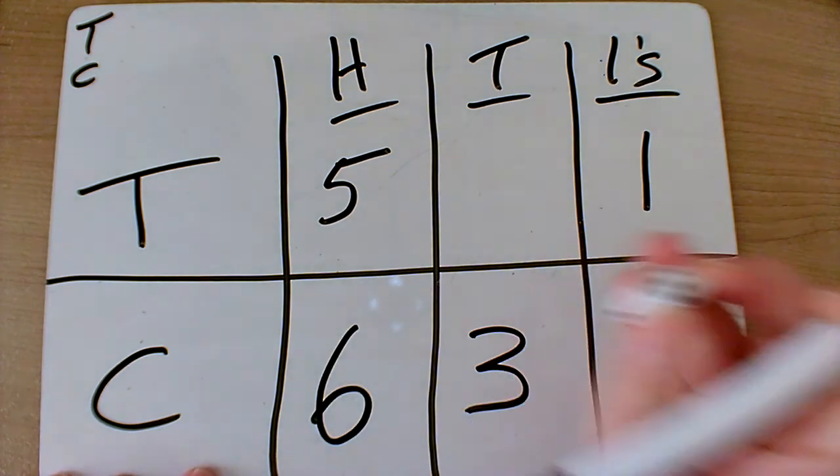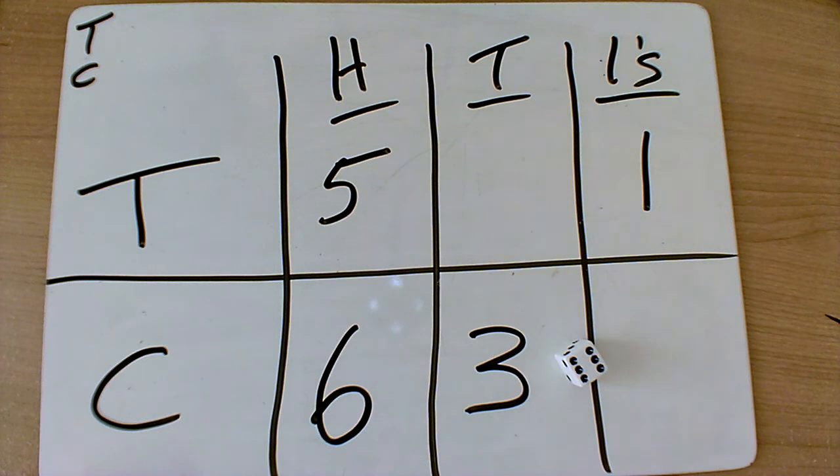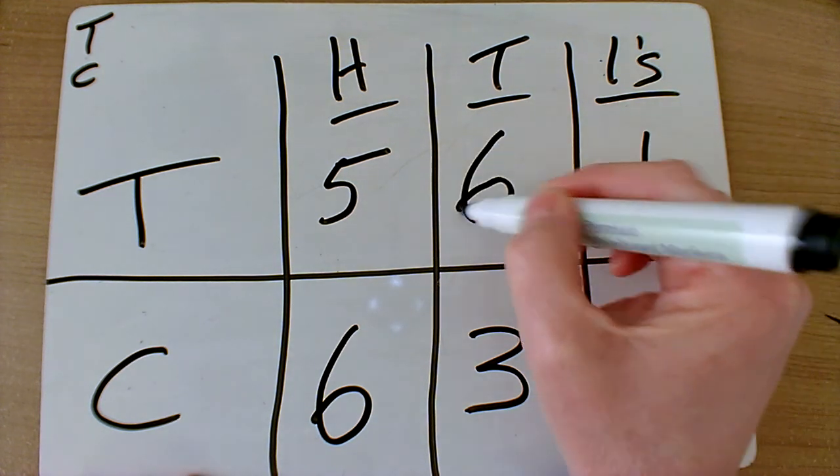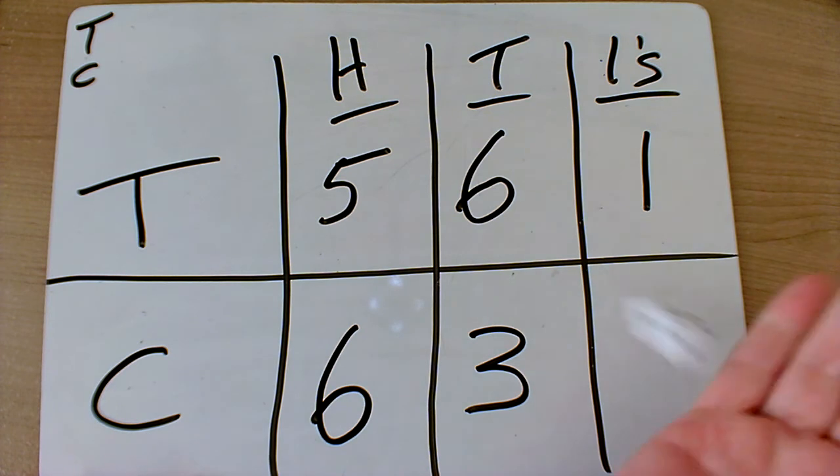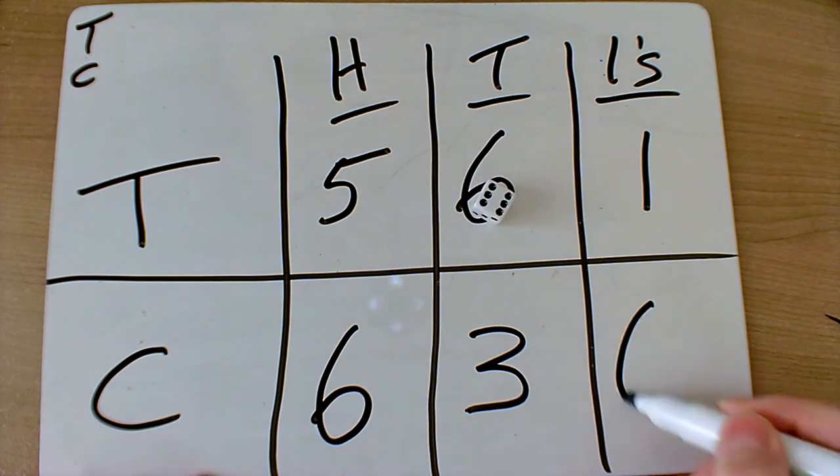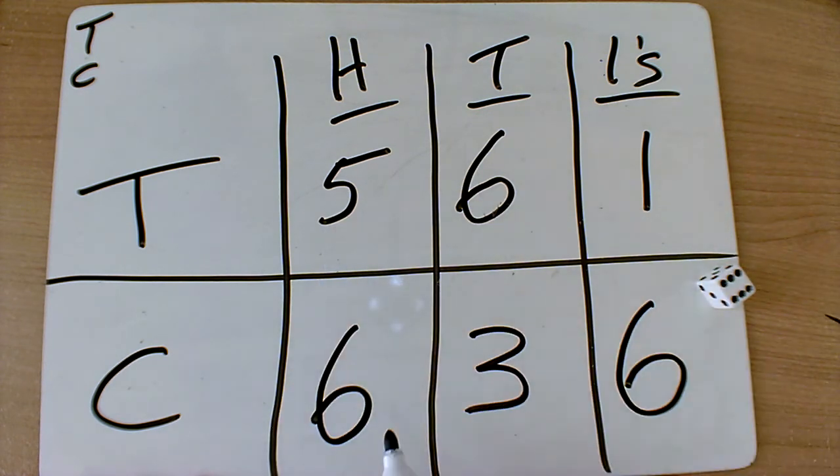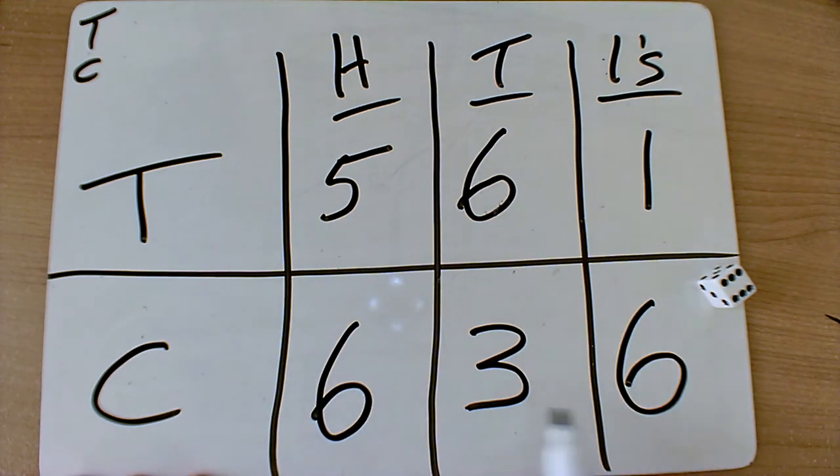column. Six, put it in my tens column, but now I wish I'd saved that for my hundreds column. And the final one is six in the ones column. So the teacher, me, has got 561. Child has got 636.